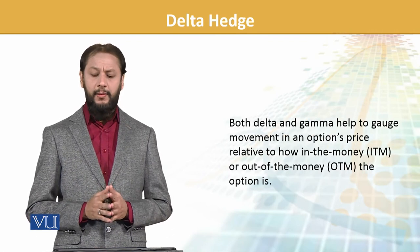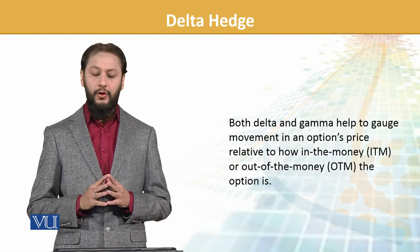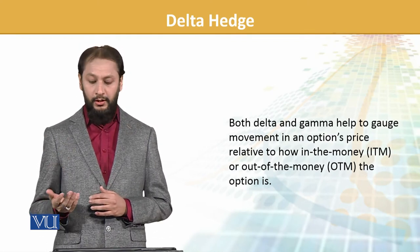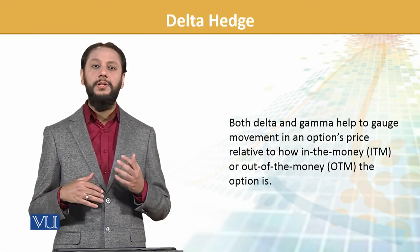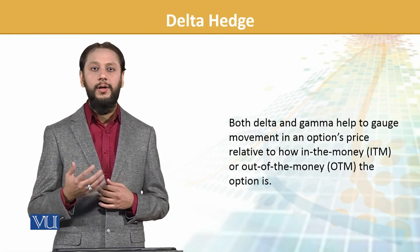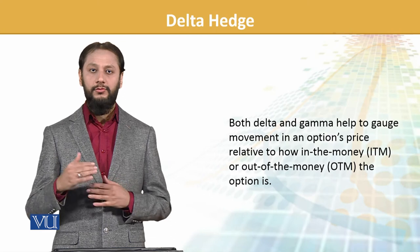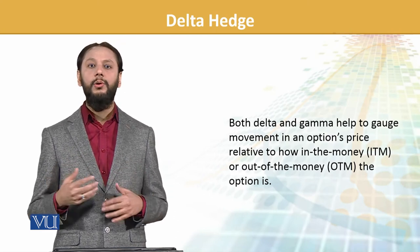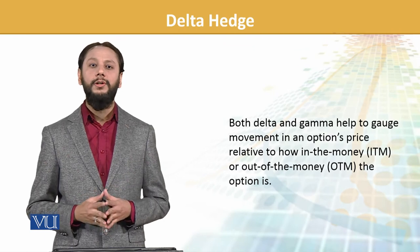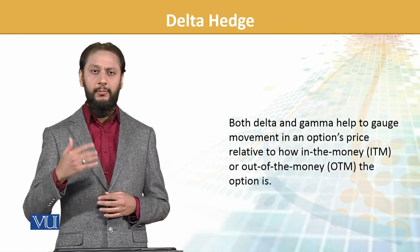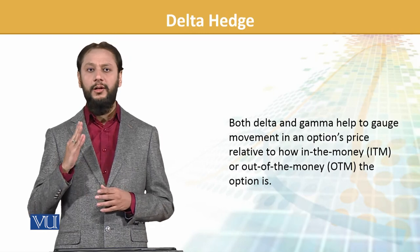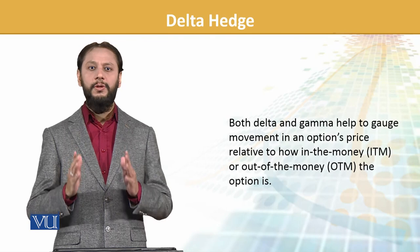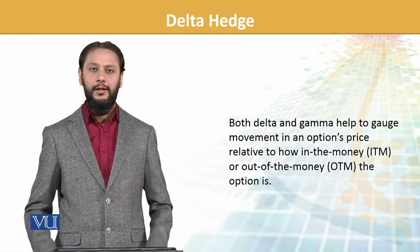Both delta and gamma help to gauge movement in an option's price relative to how in-the-money or out-of-the-money an option is — the dynamics differ in each case. Both are used together to calculate the impacts on options pricing. We will spend more time on this, but I strongly advise going through it thoroughly, step by step. Thank you.